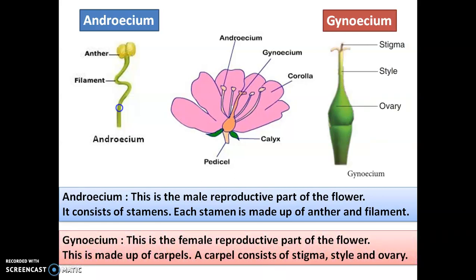Moving to gynoecium. Gynoecium is the female reproductive part of the flower. It is made up of carpels. This entire part is the gynoecium shown here in the diagram, and this is how it looks actually. A carpel consists of a stigma, then a style, and an ovary. These are the various parts of gynoecium.